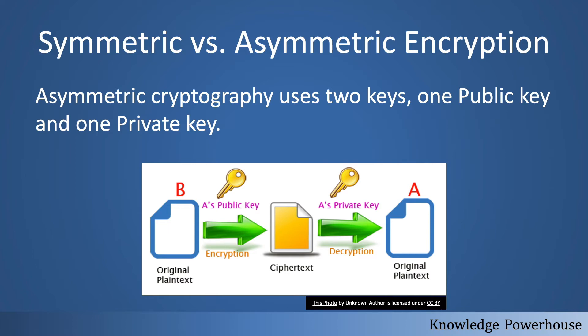In asymmetric cryptography, a very good technique was developed. Here we use two keys — one is the public key and the other is the private key. The sender encrypts using the public key, and the receiver uses the private key to decrypt. The private key belongs to the receiver — the receiver has both a private key and a public key.